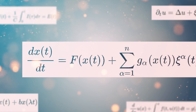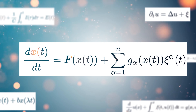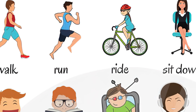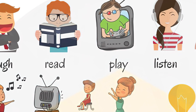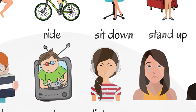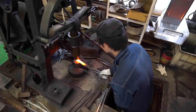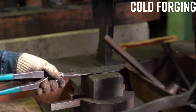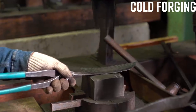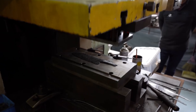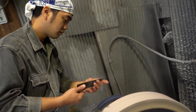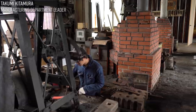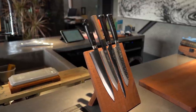A function, in simple terms, is all the action verbs we perform as an input to get some output. When we perform any action, we execute a set of instructions or algorithms. The job of a function is to help us find the optimised relationship between the input and the output we desire.